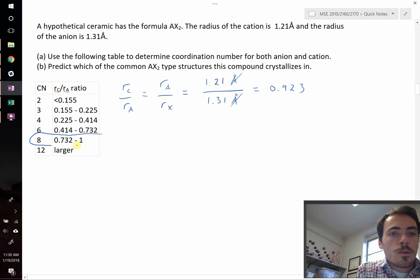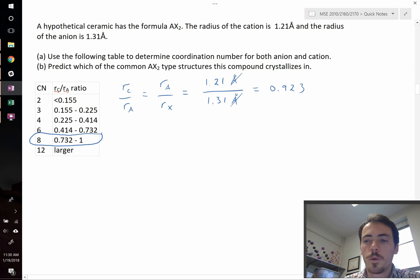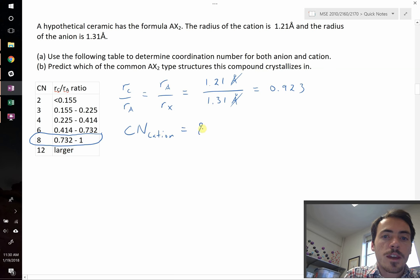Well, that corresponds to this range. It's between 0.732 and 1. Therefore, the coordination number for our cation is going to be equal to 8. That's from this table. Now again, this is a rule of thumb. There's some exceptions, but it's a pretty good predictor. Basically, that's saying that your anion is always going to be large, but in this case, your cation is also pretty large.